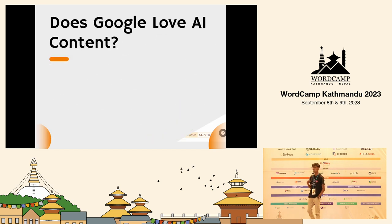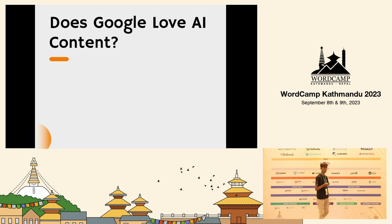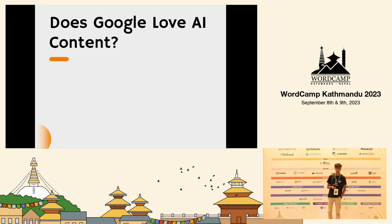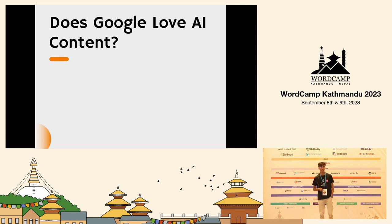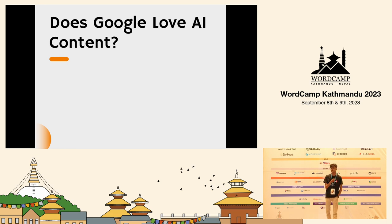So does Google love AI content? Google does love AI content — if the content provides value. There is still the EEAT framework and the requirement for quality content. Studies show that around 53% of content is GPT-generated. The question is: how much of that content actually ranks?